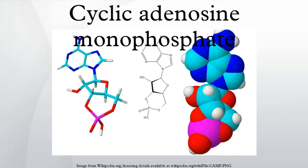Synthesis and decomposition. cAMP is synthesized from ATP by adenylyl cyclase located on the inner side of the plasma membrane and anchored at various locations in the interior of the cell. Adenylyl cyclase is activated by a range of signaling molecules through the activation of adenylyl cyclase stimulatory G-protein coupled receptors. Adenylyl cyclase is inhibited by agonists of adenylyl cyclase-inhibitory G-protein coupled receptors.